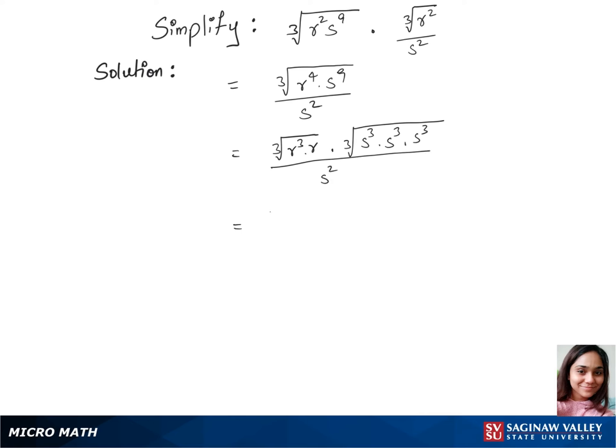We have cubic root of r³ times cubic root of r, we are just separating the cubic root, times cubic root of s³ times cubic root of s³ times cubic root of s³ over s².